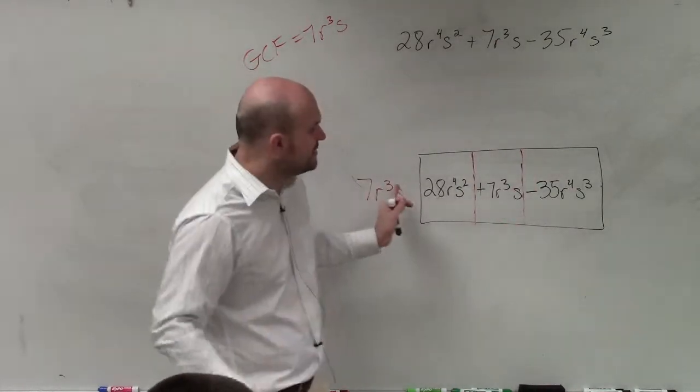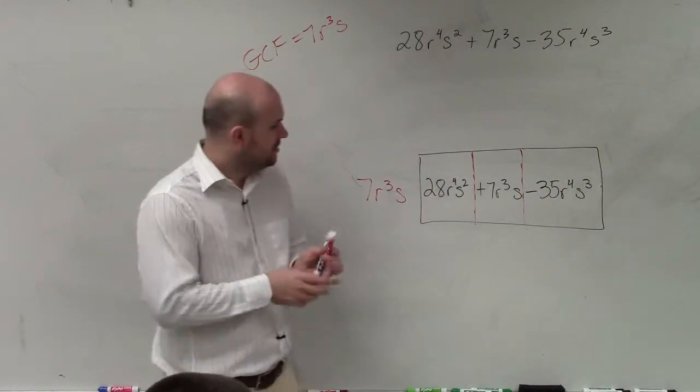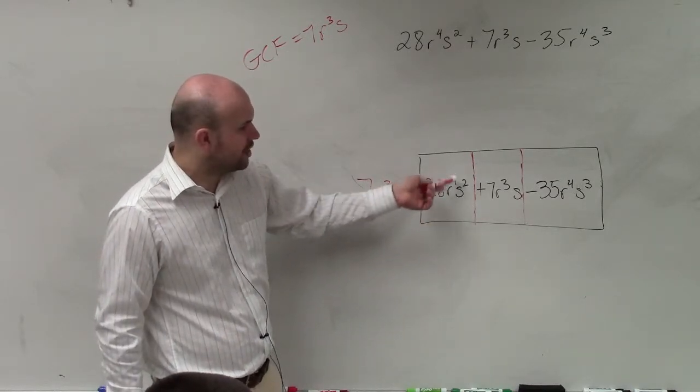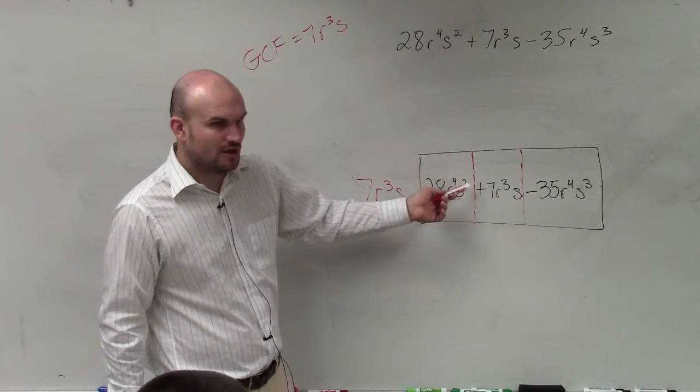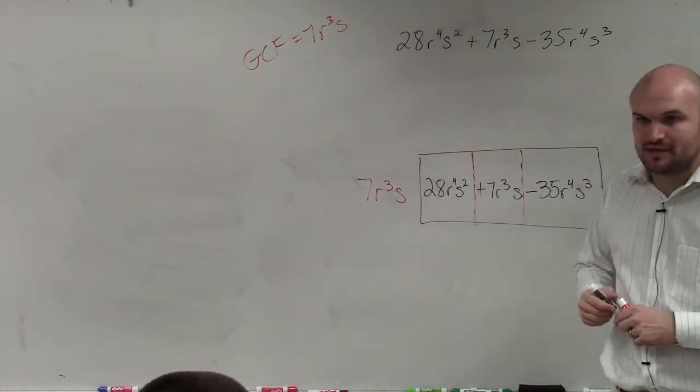So basically, rather than trying to multiply every single one, let's just do it one at a time. 7r cubed s times what gives you 28r to the fourth s squared? I'm sorry. So basically what you're trying to do is saying, 7 times what gives you 28?